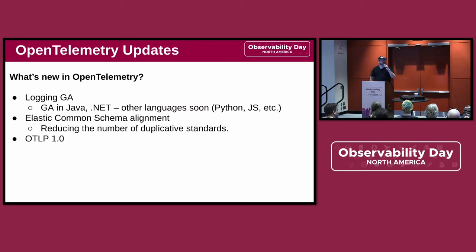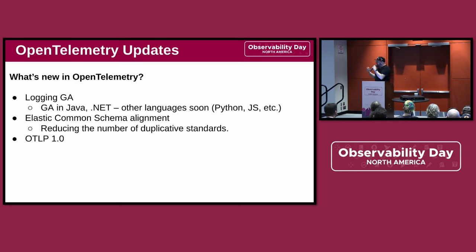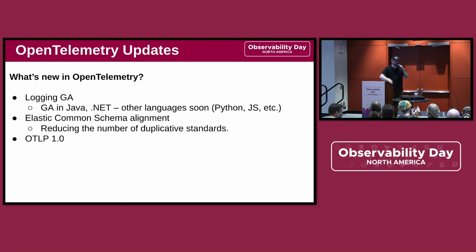Another big thing from earlier this year is OTLP at 1.0. This has been why we're seeing more and more uptake of OpenTelemetry as a protocol for transmitting data. We're seeing this in the hardware sector — in telecom, in IoT, GPUs. There are plugins to get this out of NVIDIA GPUs, so if you're doing ML model training, you can emit those metrics in OpenTelemetry format.